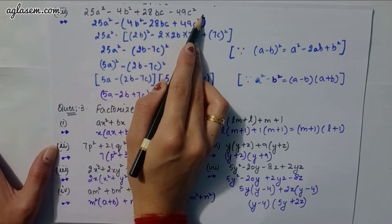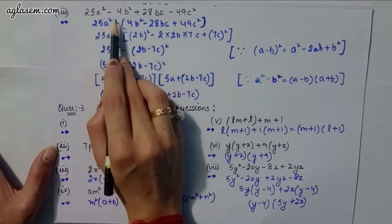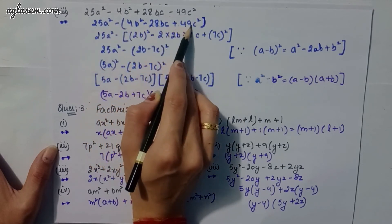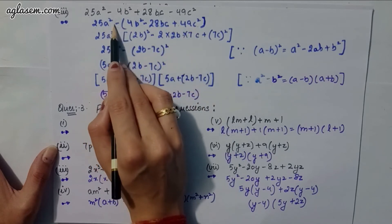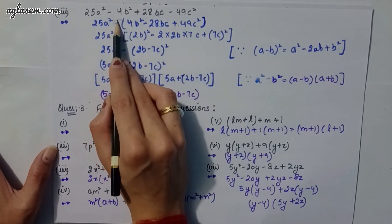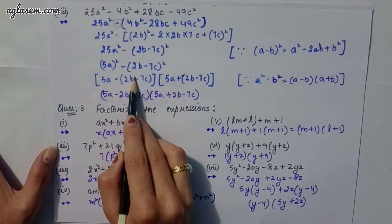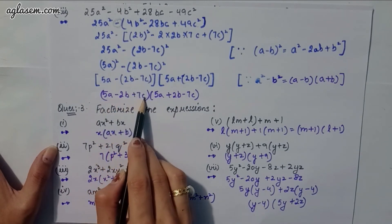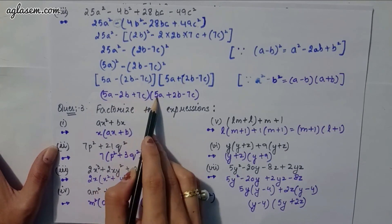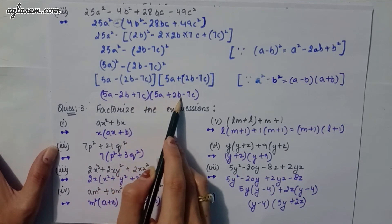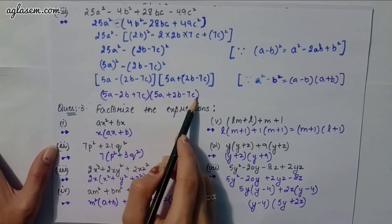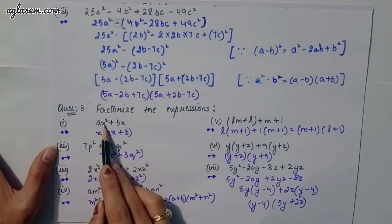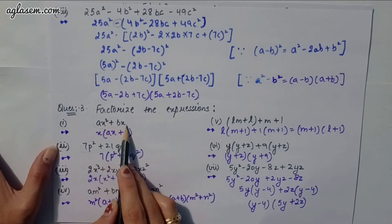Eighth part: 25a² − 4b² + 28bc − 49c². We regroup: 25a² − (4b² − 28bc + 49c²) = (5a)² − (2b − 7c)², giving (5a − (2b − 7c))(5a + (2b − 7c)) = (5a − 2b + 7c)(5a + 2b − 7c).